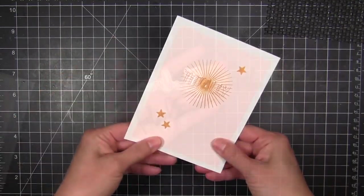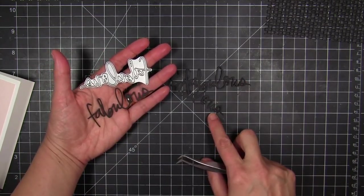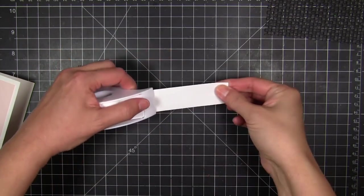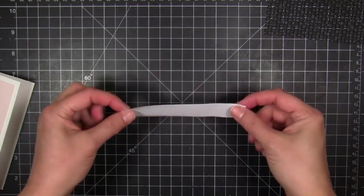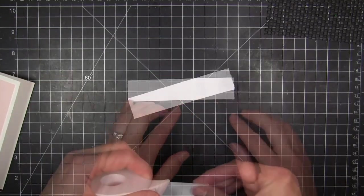So now I'm going to die cut Fabulous three times from some licorice card stock. This is a nice black card stock. And then I'm going to use post-it tape. I put down the strip with the sticky side up,